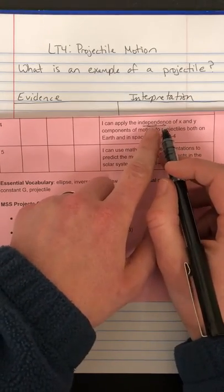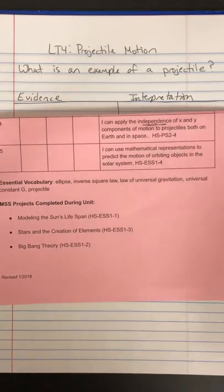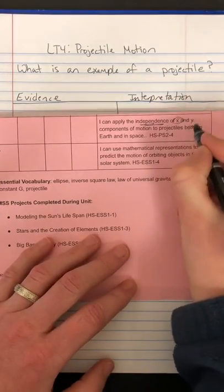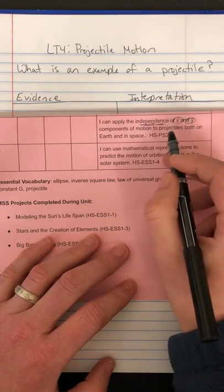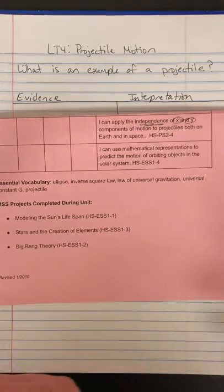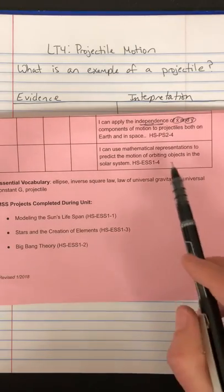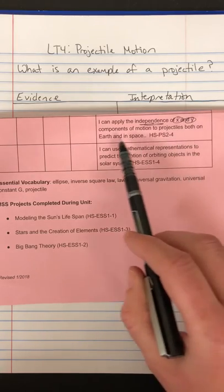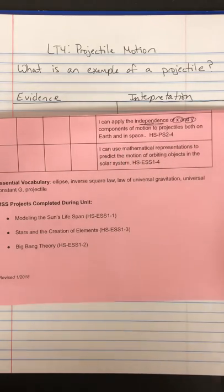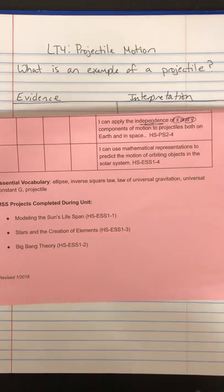All right, so there's a lot of words we've got to break apart here. So the first one is independence. Think about what it means to be independent, right? You don't depend on something else, which means when we deal with X and Y, that is going to be horizontal and vertical motion. Because there's usually an X and Y component that work together to create a curved path.